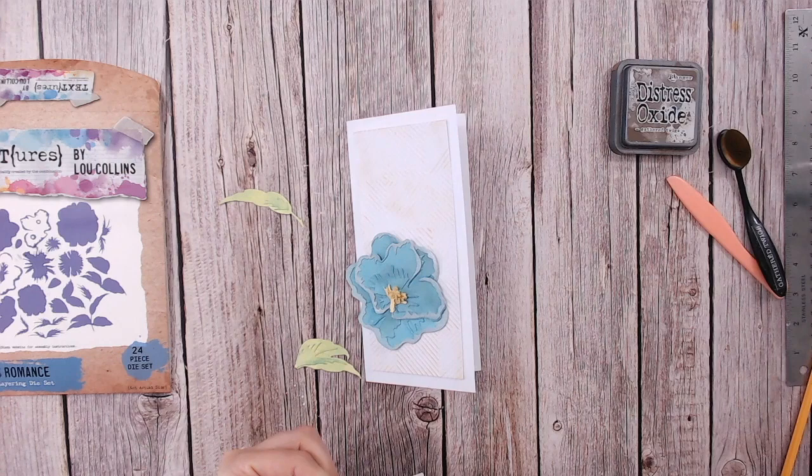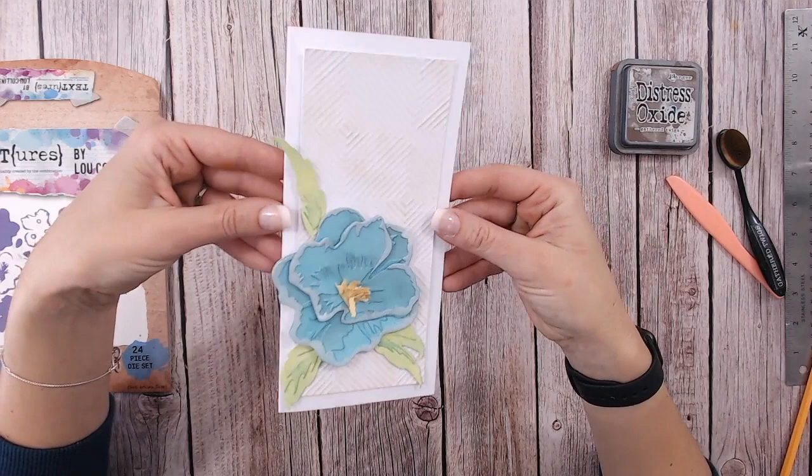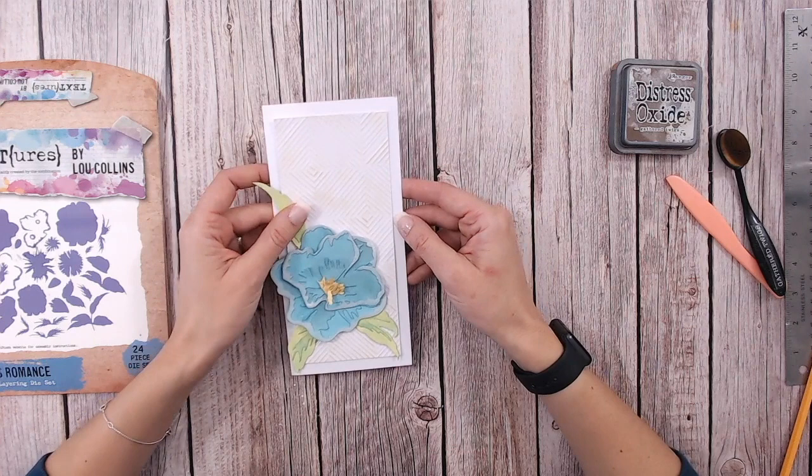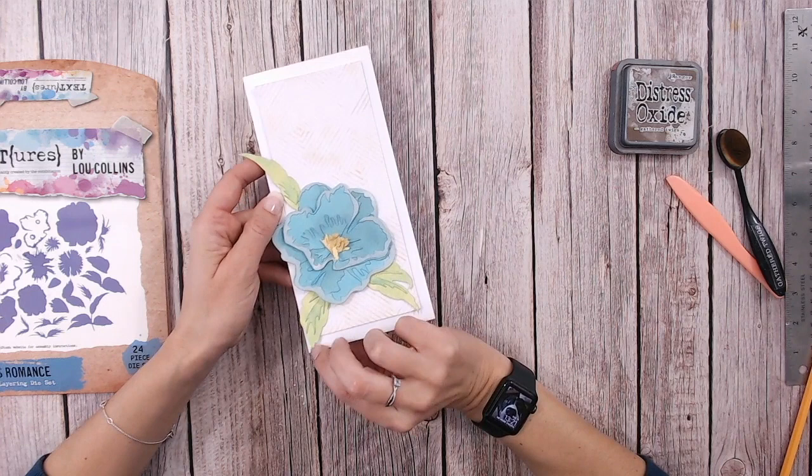But they're absolutely perfect to work alongside that subtle background that we've created without even needing an embossing folder. There we go, so you can see the texture in the background. It almost looks like fabric. It's really beautiful, nice and subtle, and perfect if you don't want to add too much in the way of color to the background of your card. If you really want the colors of your focal point, in this case this is my flower, I really want this to pop and leave it a pale background without being too plain.